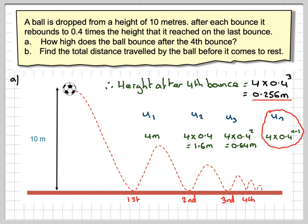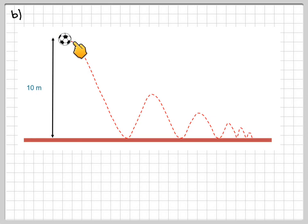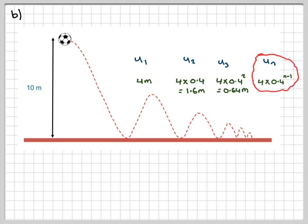Right, now we need to find the total distance travelled by the ball. So the ball will travel this distance here. We've got all these distance things here that we found before. So it will travel this distance here, and then it will travel up and down. So it will be twice this height, and then up and down again, twice this one, and twice this one. Now, these bounces will go on forevermore, because this is a geometric sequence, with common ratio 0.4, and therefore r is between minus 1 and 1.